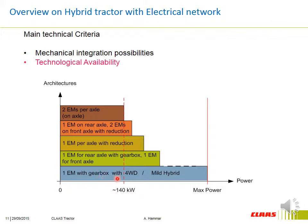The second family of configurations is the parallel solution. Here, we install an electrical machine between the engine and gearbox. The graphic shows the architecture possibilities as a function of tractor power, taking into account the mechanical integration and availability of technological solutions in terms of electrical machines and adapted gears. Now, after defining the architectures, what is the suitable architecture?